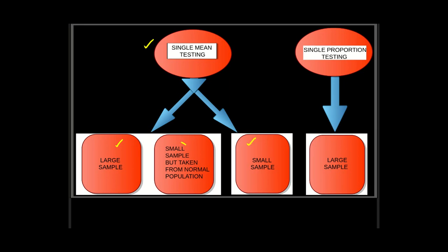Now look at this, here also the word small comes but something very important is marked here. Small but the sample is taken from a normal population. Look at this: large sample and small taken from normal will be treated alike. And then comes small sample and finally single proportion testing. Anyway let's start.